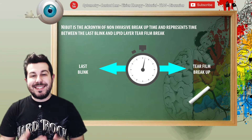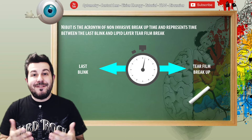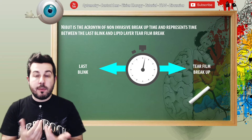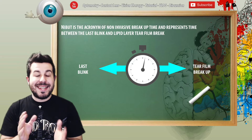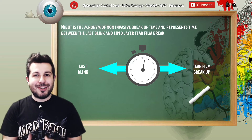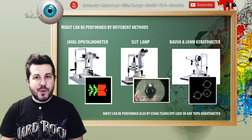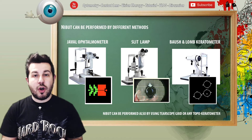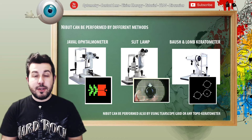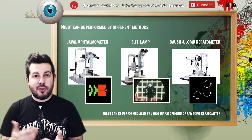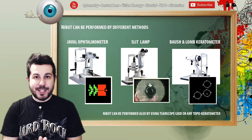NIBUT is the acronym of Non-Invasive Break Up Time, and in fact there's no material, object, or instrument which interacts directly with the anterior segment of our patient. NIBUT can be executed in many ways — for example, we can use an ophthalmometer, Javal shots, a slit lamp and its projection image, or a Bausch & Lomb keratometer.